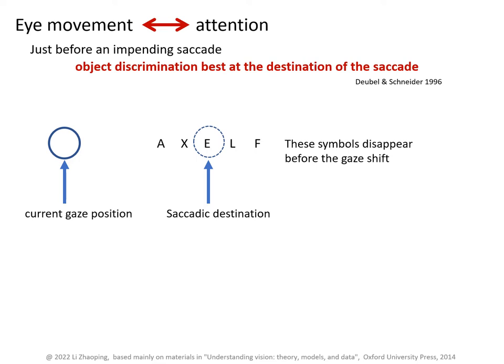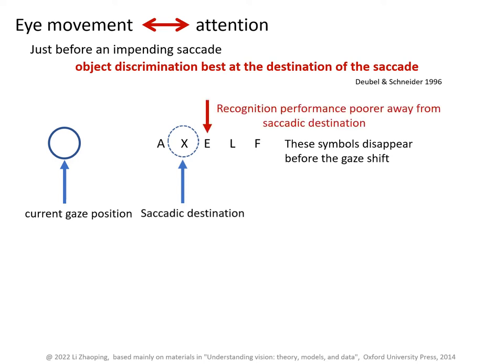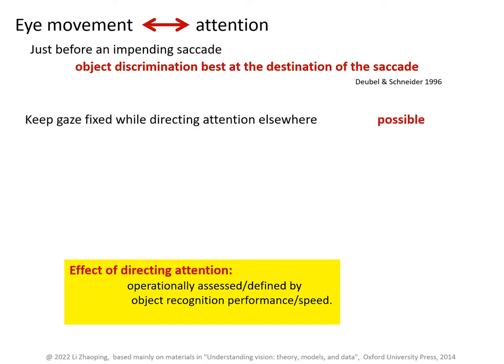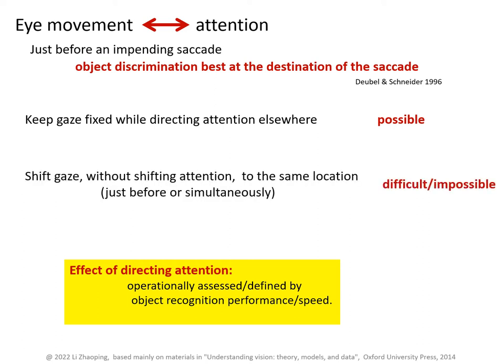Let's say the visual inputs are sufficiently clear that this observer can just recognize the central symbol well. Now, if the saccade is aimed at the second symbol instead, then recognition performance on the central third symbol drops. In visual research, whether visual recognition is good, or whether visual performance is fast, is used as a measure of whether attention is effectively directed at the location of the visual object to be recognized. Accordingly, it is possible to keep gaze fixed while directing attention elsewhere. However, it is difficult or impossible to shift gaze to one location without moving attention to the same location at the same time or just before that.